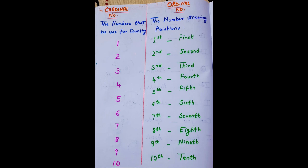This is the first worksheet where the kid can easily understand what is an ordinal number. Ordinal numbers are the numbers which show us the position — like first, second, third, fourth, fifth, sixth, seventh, eighth, ninth, and tenth.